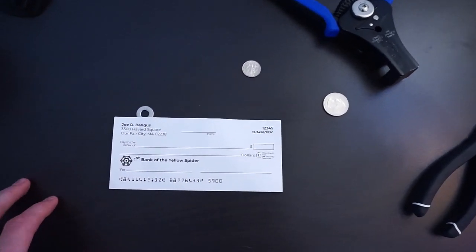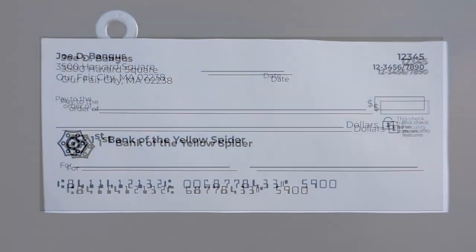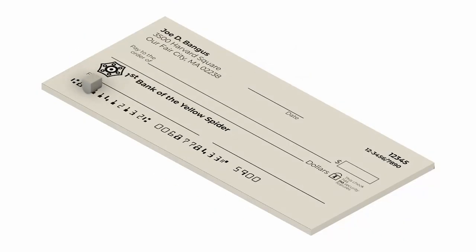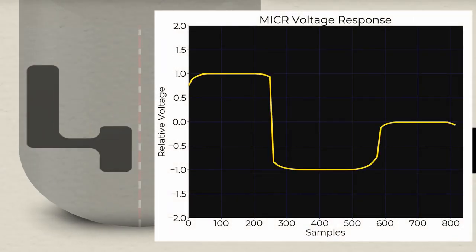His idea was this. Take the same magnetic ink and use it to print standard Arabic numerals. Then run the pickup over the ink and analyze the resulting waveform to figure out what the numbers were. It was quite simple in theory.